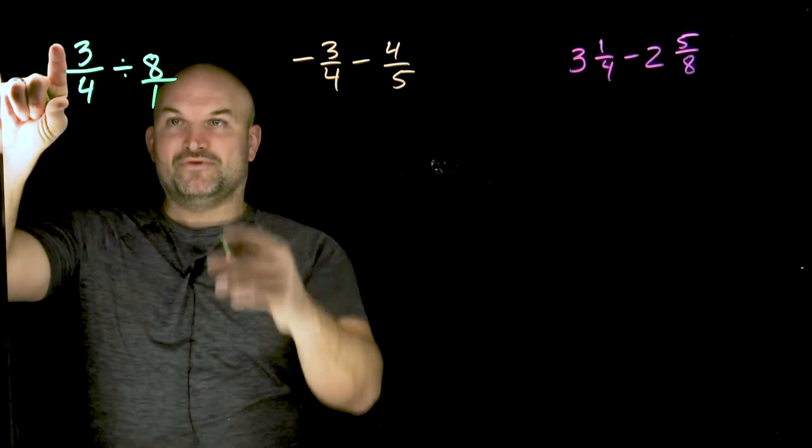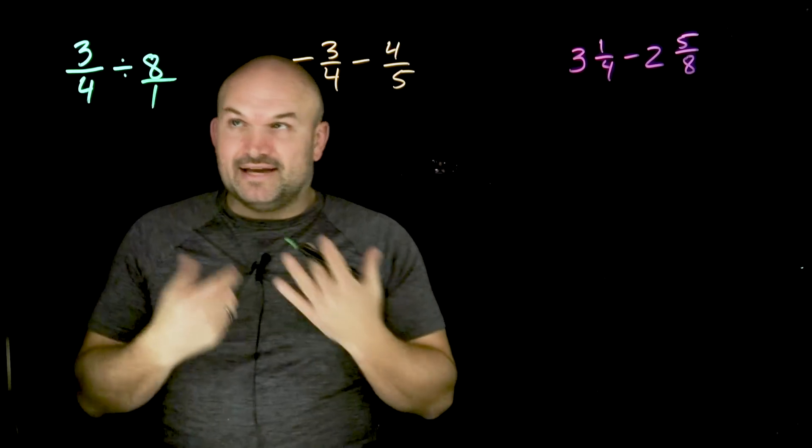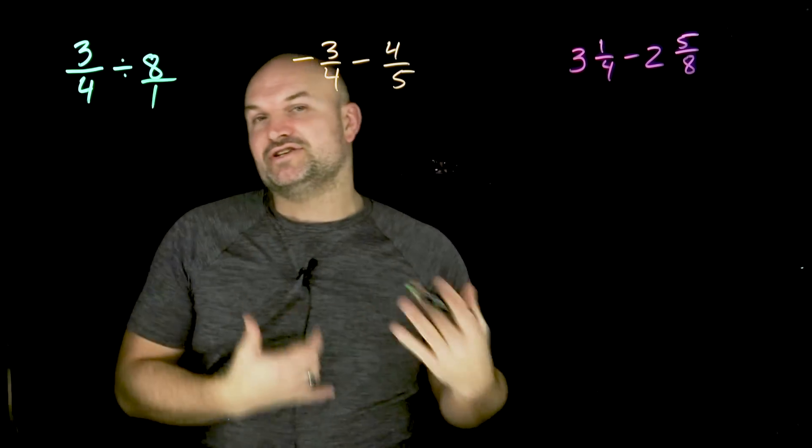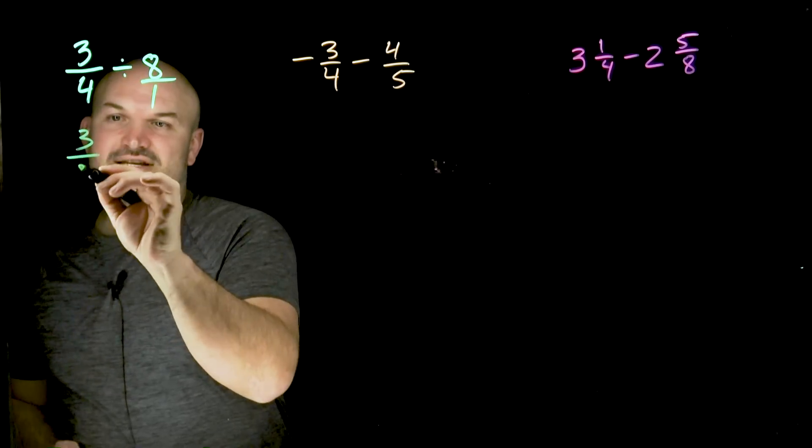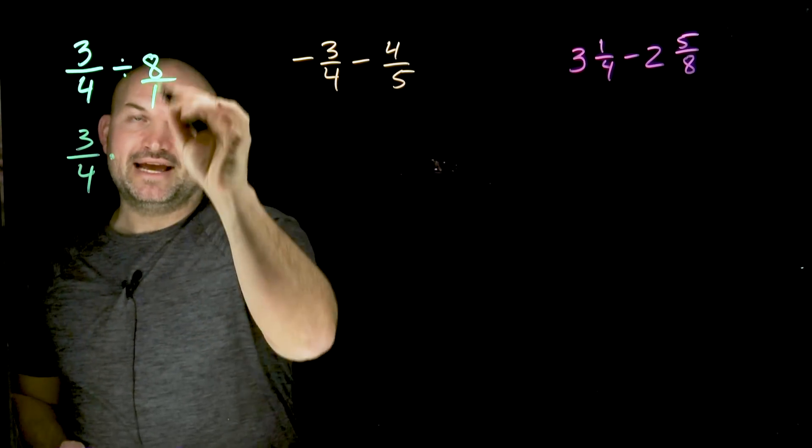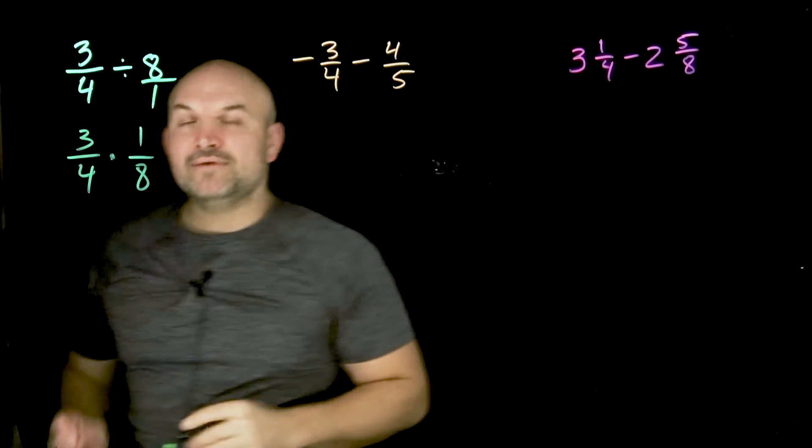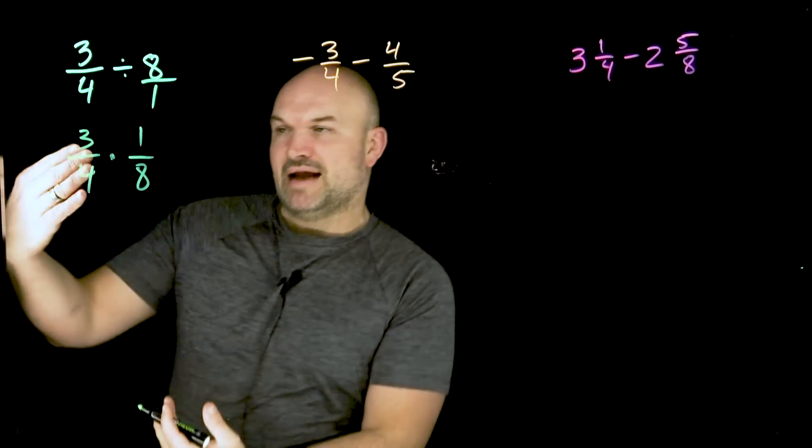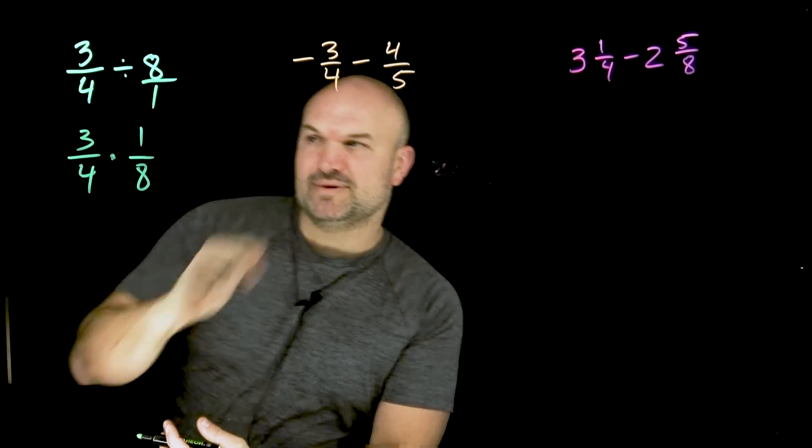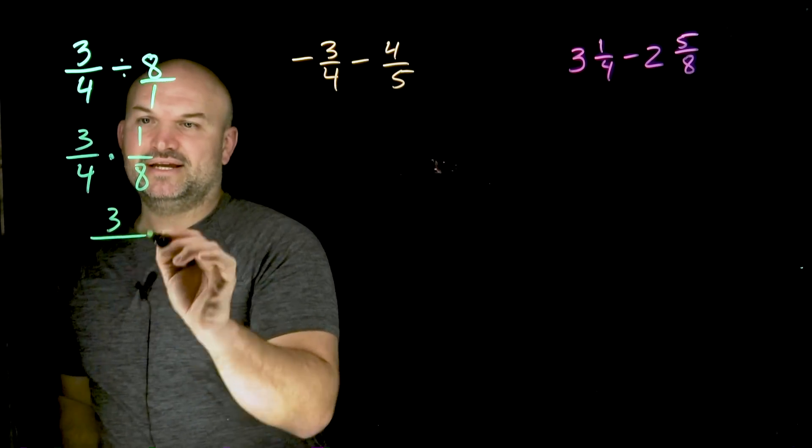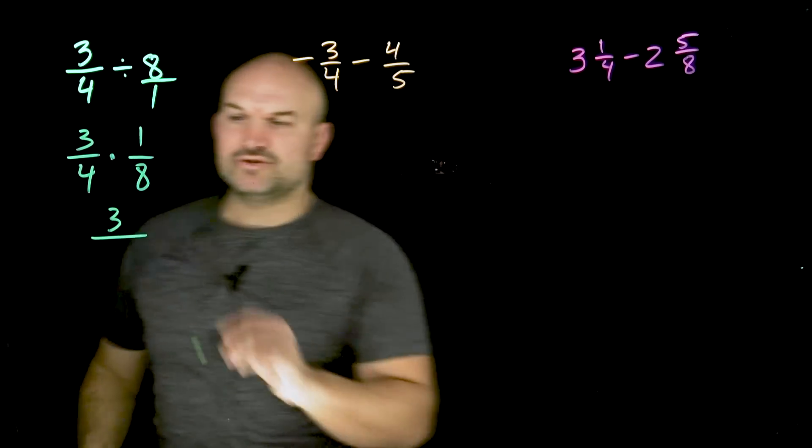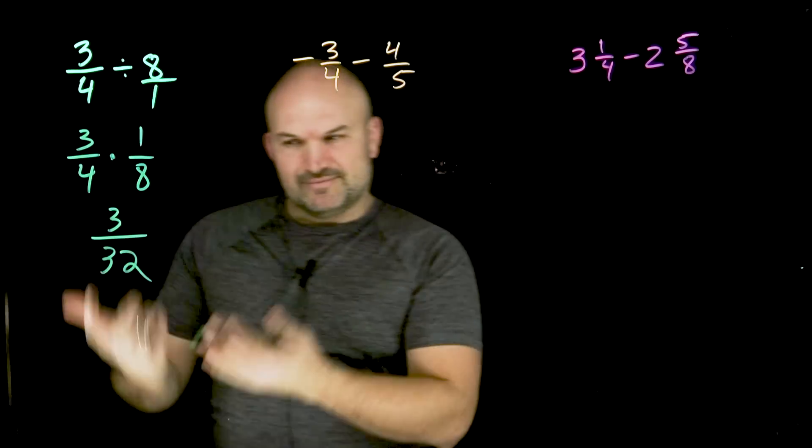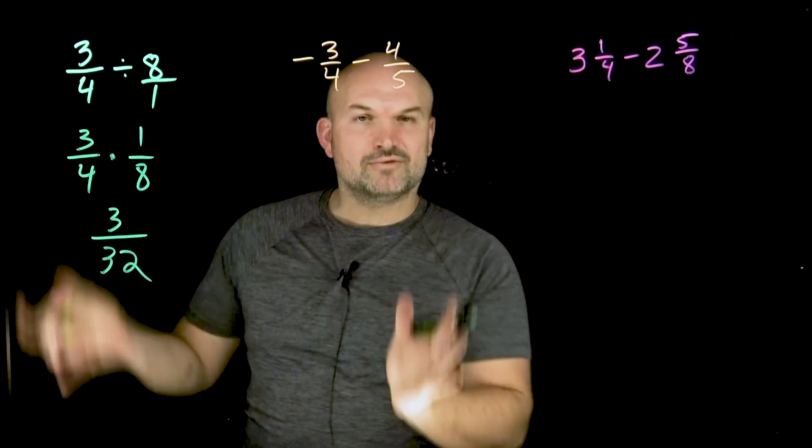Now I have three-fourths divided by eight over one. And hopefully if we remember when we're doing division of fractions, that division of fractions, all we simply need to do is reciprocate our divisor and then we can apply multiplication. So now I have three-fourths times one over eight and I can multiply straight across, which is going to be a three over four times eight, which is going to be a 32. Always look to be able to simplify, but in this case, we're going to be good to go.